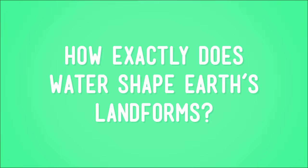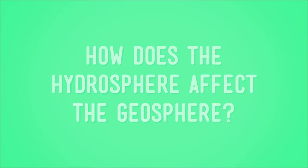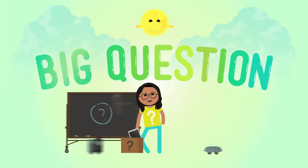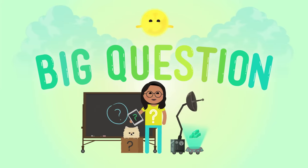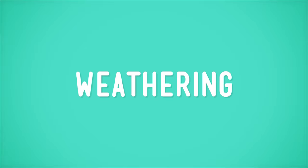So one day, our planet will look different, maybe a lot different, from how it looks now. So how exactly does water shape Earth's landforms? Or to bring it back to the spheres we've been talking about, how does the hydrosphere affect the geosphere? To understand that, we need to discuss weathering.